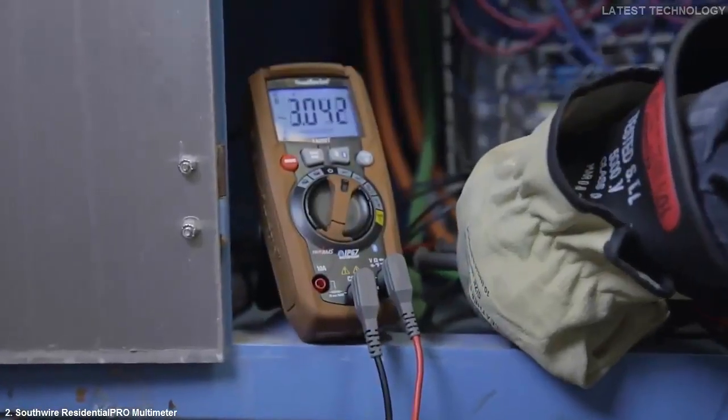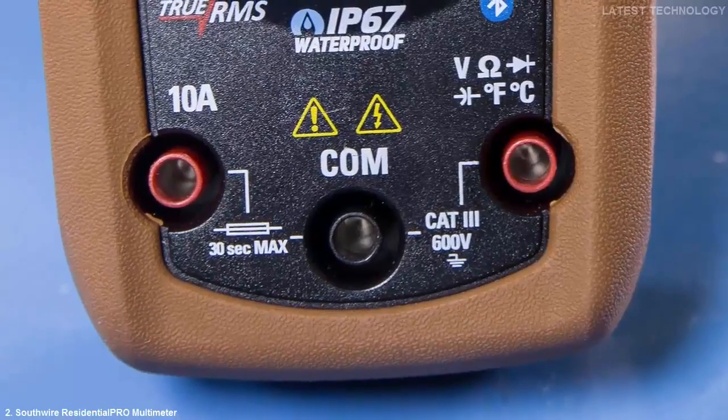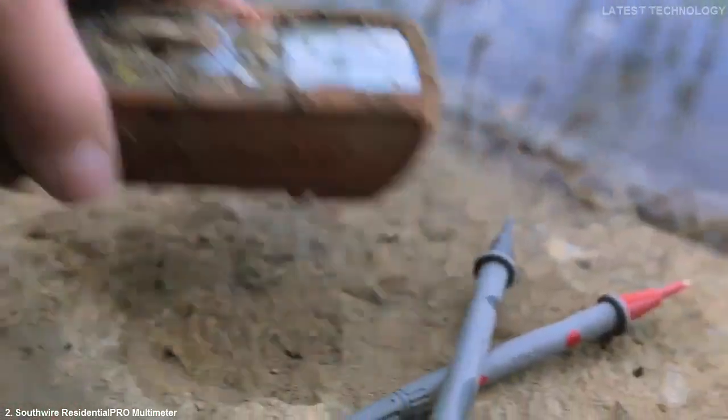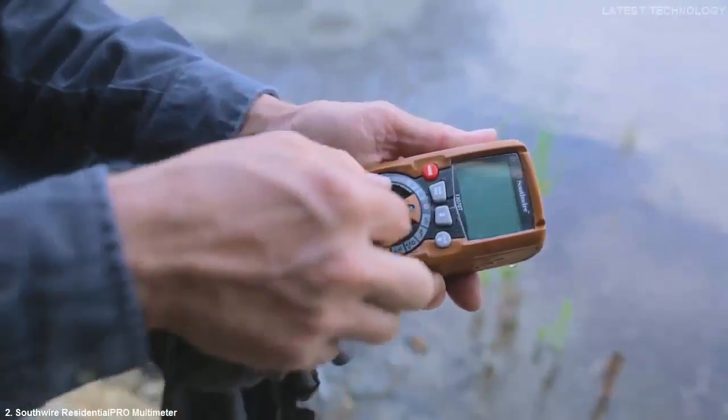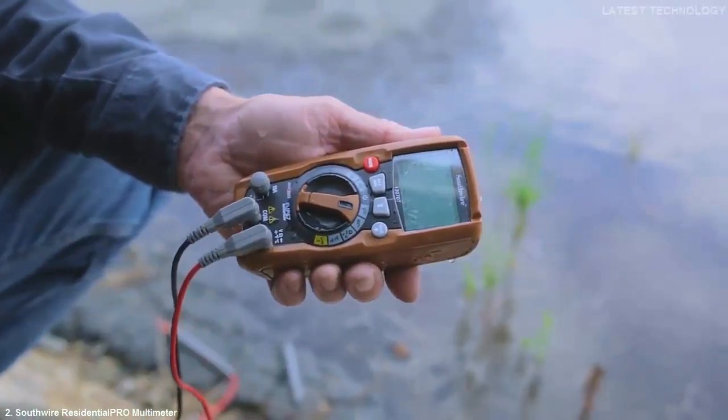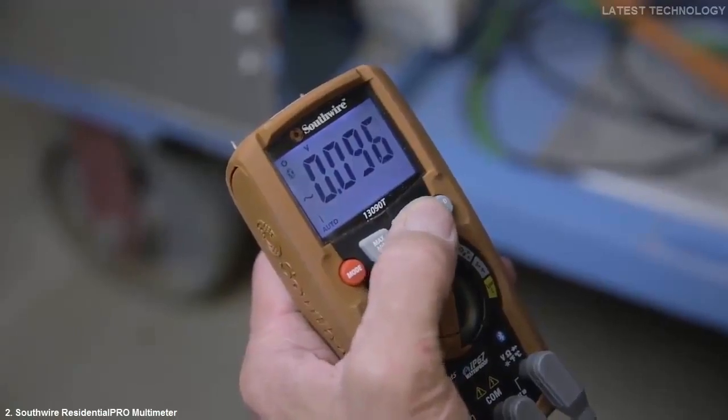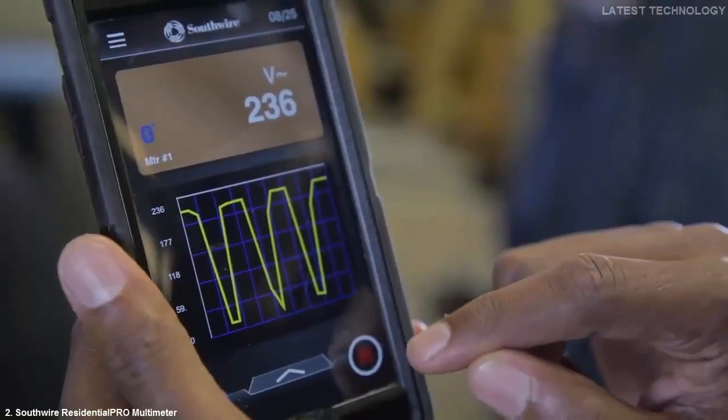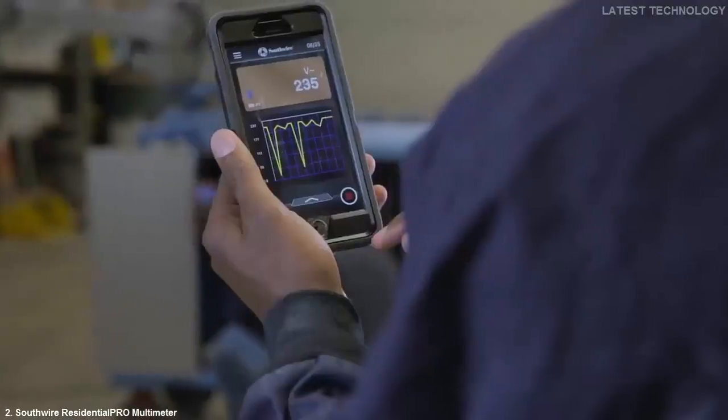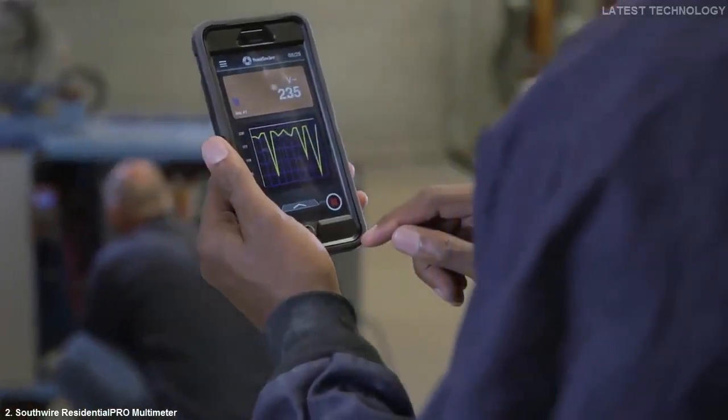Other features include an easy-to-read backlit display, a Category 3 safety rating, and a rugged, waterproof, and dust-tight housing that withstands tough work environments. In addition, the 13090T provides a new way to take readings using Bluetooth technology. See our video on the Southwire Map mobile app for more detail.